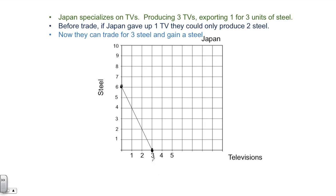They will export one of those televisions for three units of steel. Now, on their own, if Japan would have given up this one unit of television, along their PPF, they would have been right about here. So what that means is that with their own production domestically, to give up that one television, they would have been capable of producing two steel.